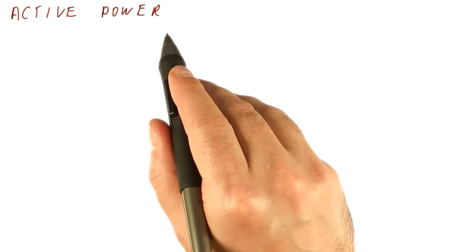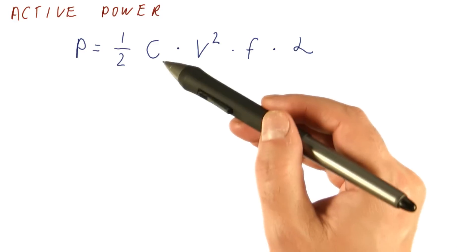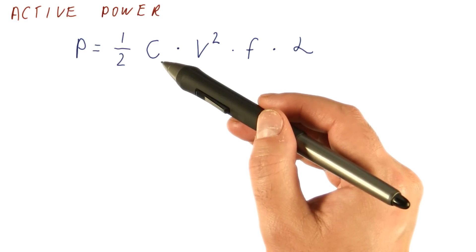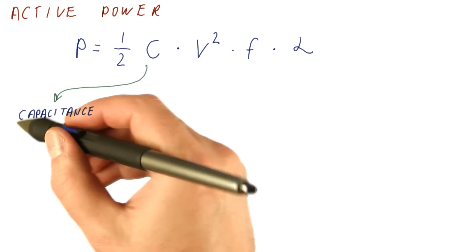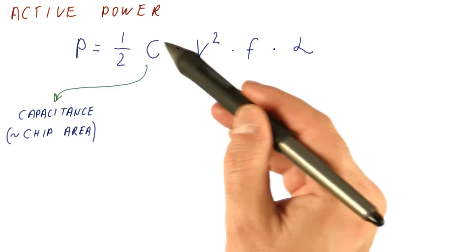First, we will discuss active power. The active power can be computed as one half of the total capacitance of the circuit, where the capacitance can be seen as roughly proportional to chip area. So larger chips will have more of this.